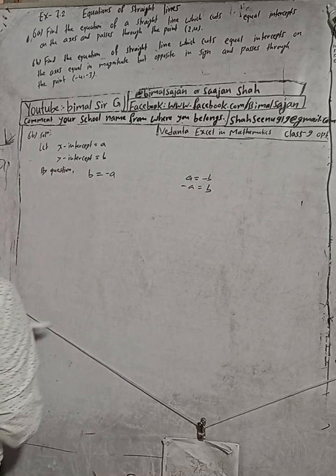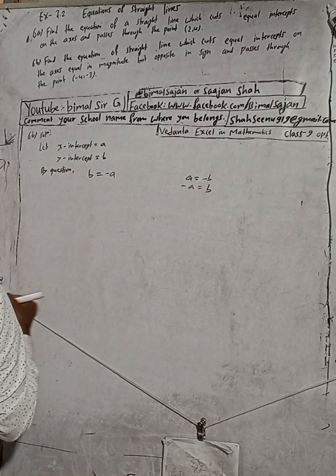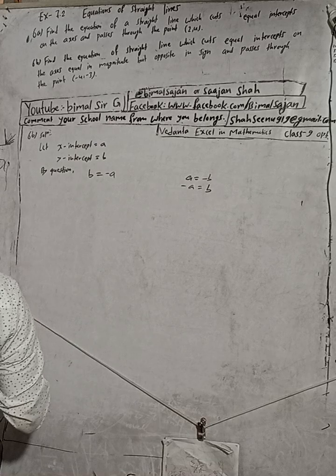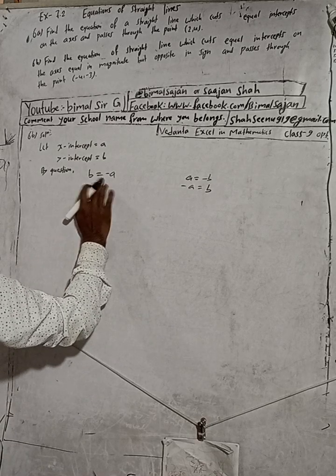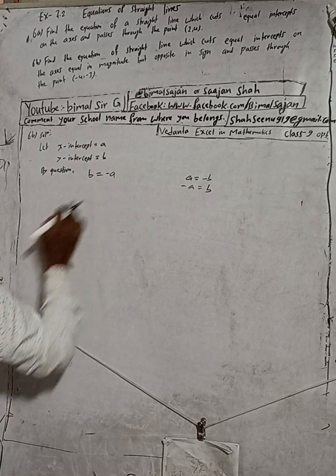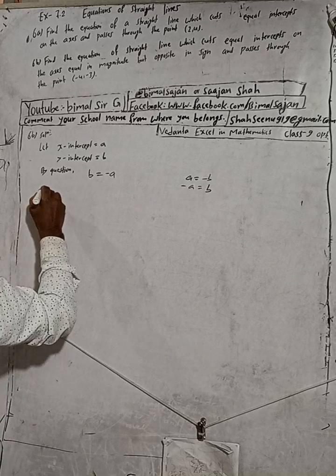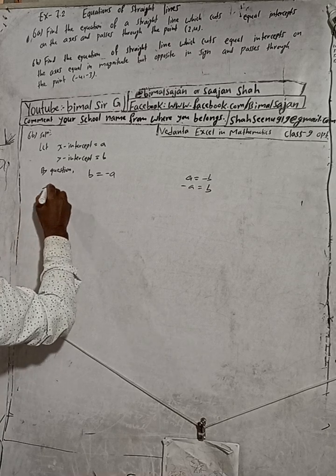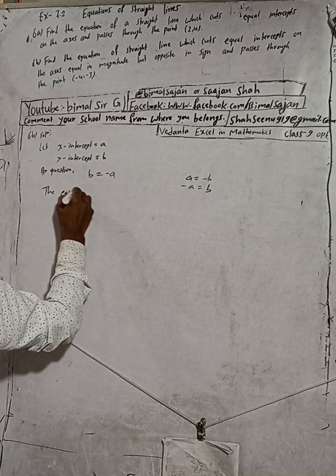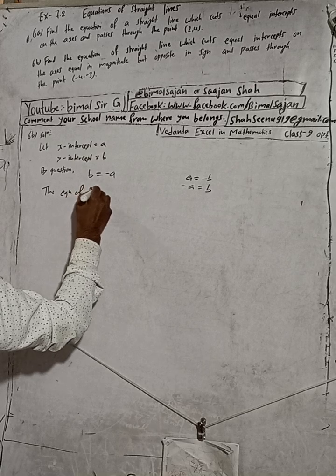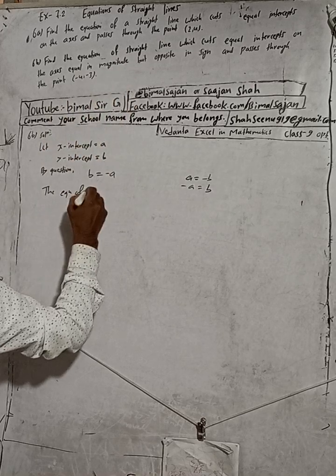So, by the question, this gives us B = -A. Now, to find the equation of the line, we use the intercept form.